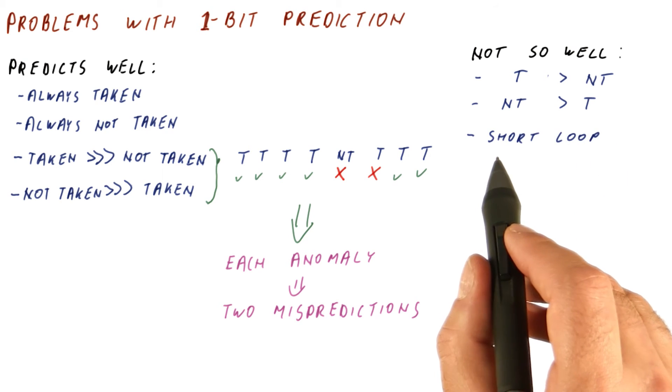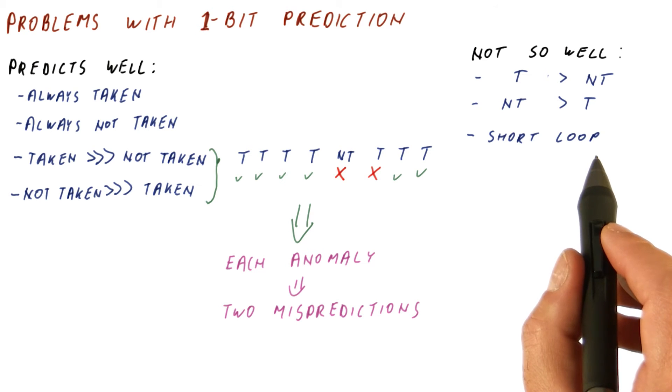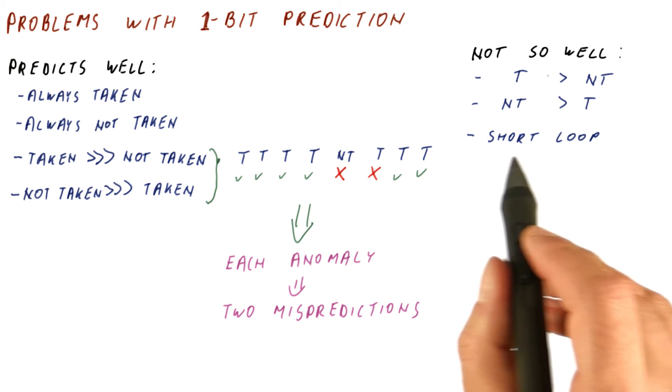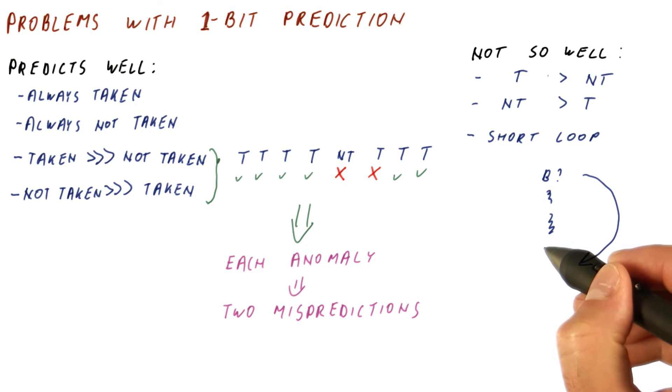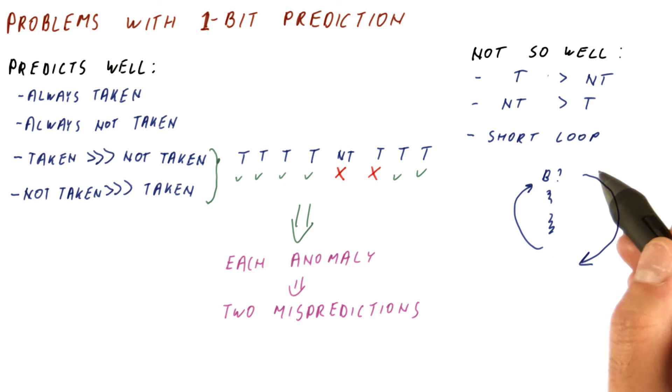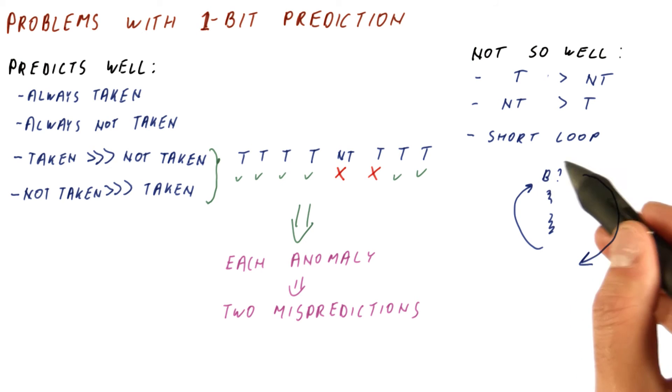Typically also, a branch predictor like this will not do well on short loops. Why? Because in a short loop, we have a branch that, for example, exits the loop, then we have some loop behavior, and then a branch that loops back. The branch that exits the loop will be predicted correctly as long as we stay in the loop by this predictor. The exit from the loop will be mispredicted. The branch predictor will now be trained to take this path here.